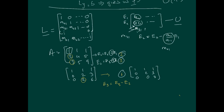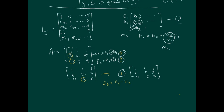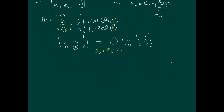We're almost done. Our L matrix can now be constructed: it's [1, 0, 0; 2, 1, 0; 3, 1, 1] — the diagonal is ones, with multiple 2 at position (2,1), multiples 3 and 1 at positions (3,1) and (3,2). And our U is the reduced matrix: [1, 1, 1; 0, 2, 3; 0, 0, 3].